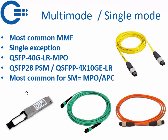Another important point is that there are multimode and single mode versions. The most common is multimode; single mode is the exception but you do see it. We have a part name for the LR MPO version. Cisco calls it QSFP28 PSM (Parallel Single Mode) and Juniper calls it QSFP 4x10G LR — both are single mode versions. Importantly, they use MPO APC connectors, so the fiber must be single mode and APC, angled at 8 degrees.